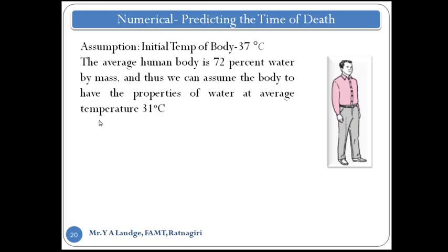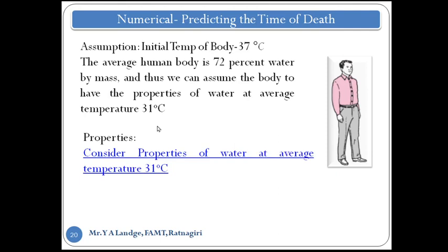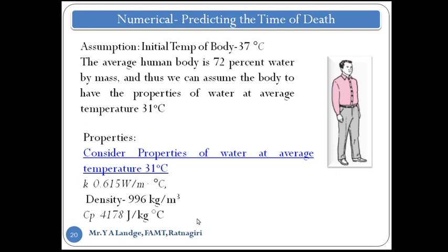The properties of water at 31 degree Celsius are: thermal conductivity is 0.615 W/m°C, density is 996 kg per meter cube, and specific heat is 4178 joule per kg per degree Celsius. The structure of the body is considered cylindrical. So the assumptions are: initial body temperature is 37 degree Celsius, and the properties of water — conductivity, density, and specific heat — are used based on the 72 percent water content of the body.